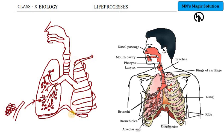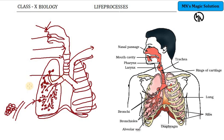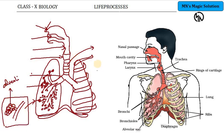Now you can go about with the labeling. The first part is the nasal passage, then the mouth cavity. After the mouth cavity comes the pharynx, then the larynx, and then the rings of cartilage. The rings of cartilage lead to the bronchi. The bronchi further divides into bronchioles, and the bronchioles further lead to the alveoli and alveolar sac. In the expanded picture of the alveolar sac you can find the alveoli. Apart from these, label the rings of cartilage and the diaphragm.